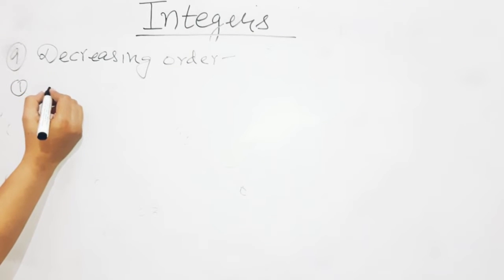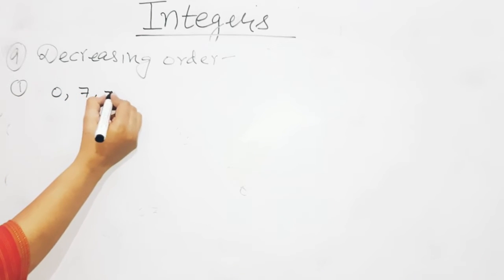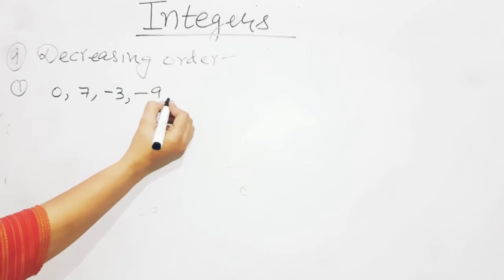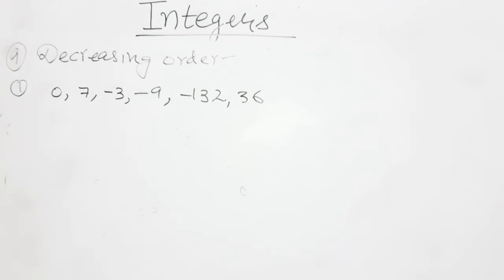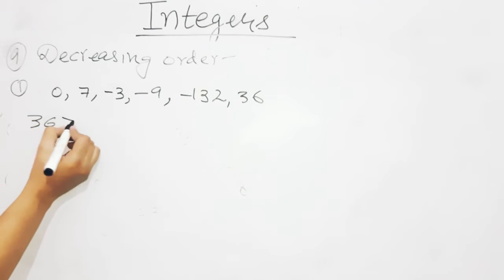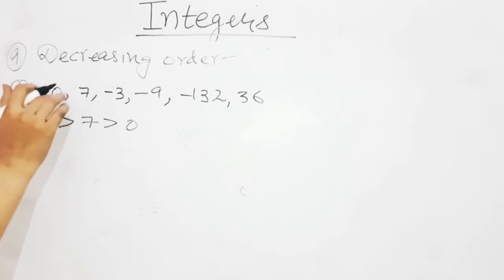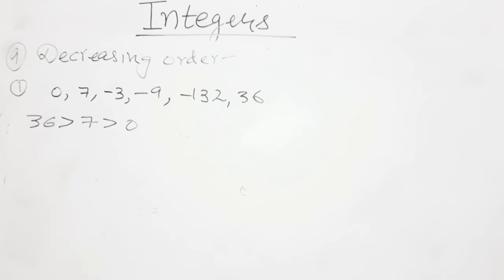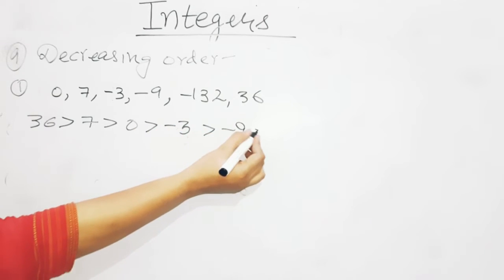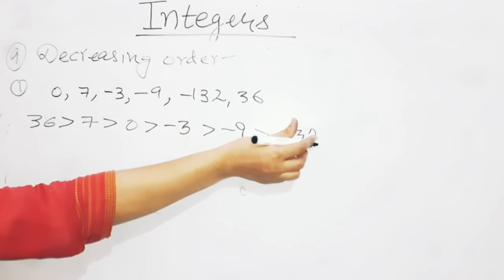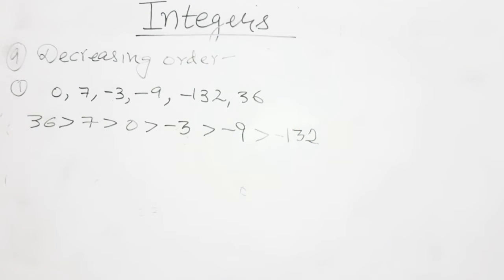The first option is: 0, 7, minus 3, minus 9, minus 132, and 36. Negatives can never be the biggest. There are two positive numbers: 7 and 36. So 36 is bigger than 7, then 7. After that comes 0, because 0 is greater than any negative integer. Then minus 3, minus 9, and minus 132 — that is the smallest.